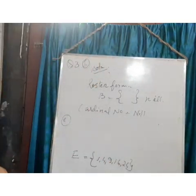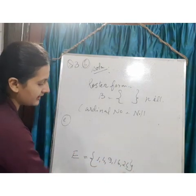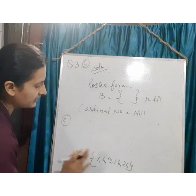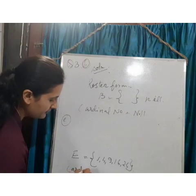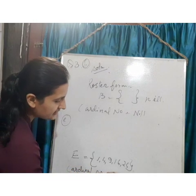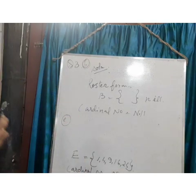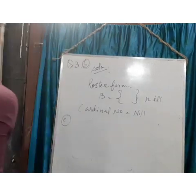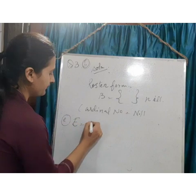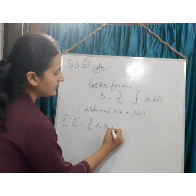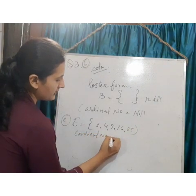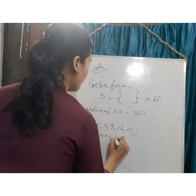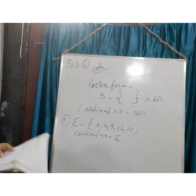The set E = {1, 4, 9, 16, 25}. The cardinal number is the number of elements: 1, 2, 3, 4, 5 — so the cardinal number is 5. I hope that is clear to you.